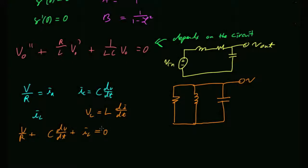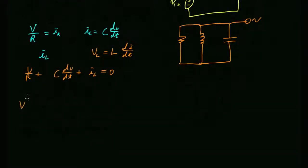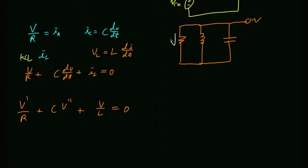To get everything in terms of voltage and form a differential equation, take the derivative of the whole KCL equation. That gives v'/R plus C·v'' plus the derivative of the inductor current. The derivative of the inductor current is v/L, obtained by rearranging v = L·di/dt.